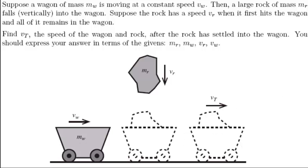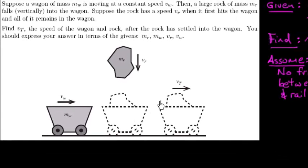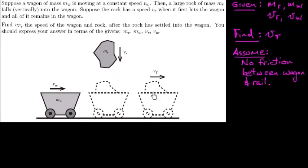What we want to do is find the speed of them together after the rock becomes settled inside the wagon. We're going to assume there's no friction between the rails and the wagon.